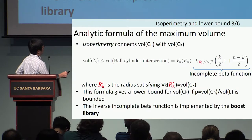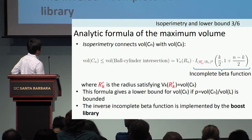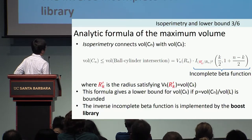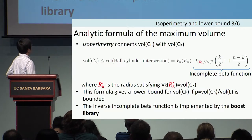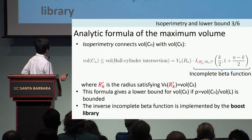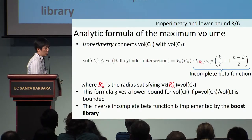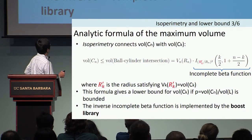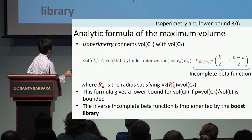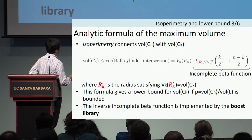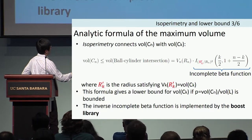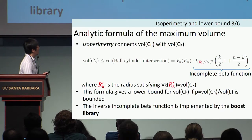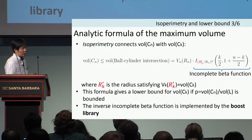In this upper bound, we have R prime K, which is the radius of the k-ball whose volume equals that of CK. This relation is actually a lower bound for R prime K. From this, we can derive a lower bound for RK by using the inverse of this function, which is an inverse incomplete beta function — a special function easily computed using standard libraries.